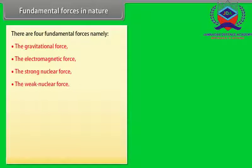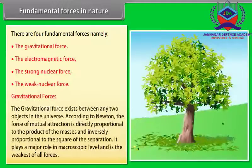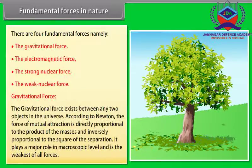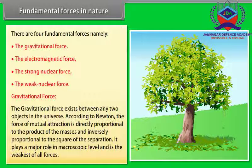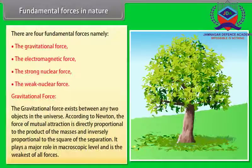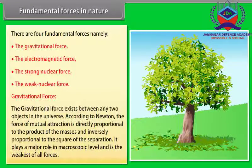The gravitational force exists between any two objects in the universe. According to Newton, the force of mutual attraction is directly proportional to the product of the masses and inversely proportional to the square of the separation. It plays a major role in macroscopic level and is the weakest of all forces.